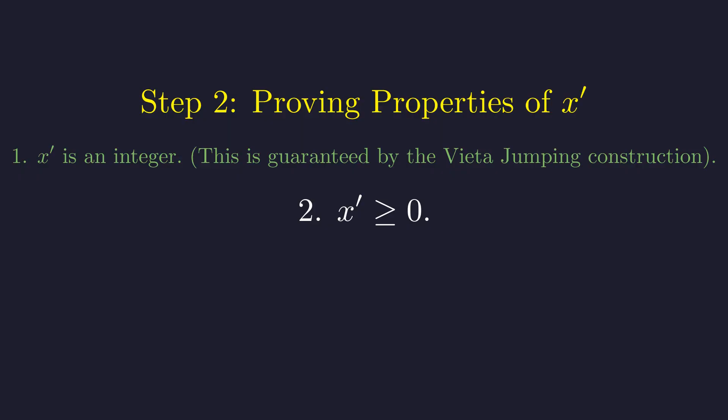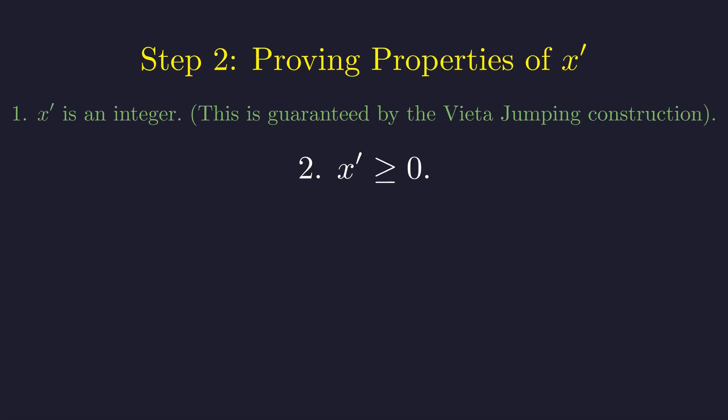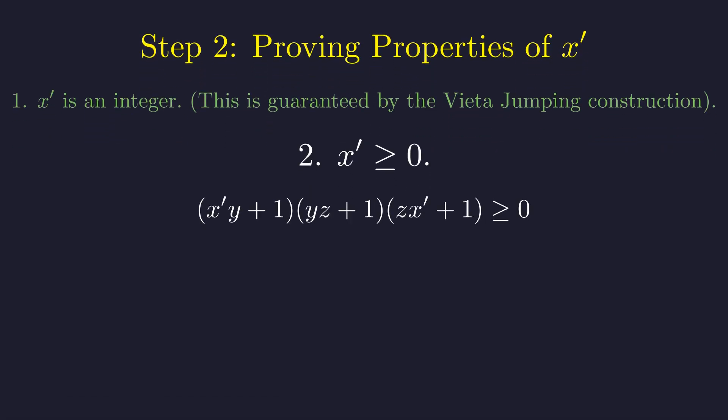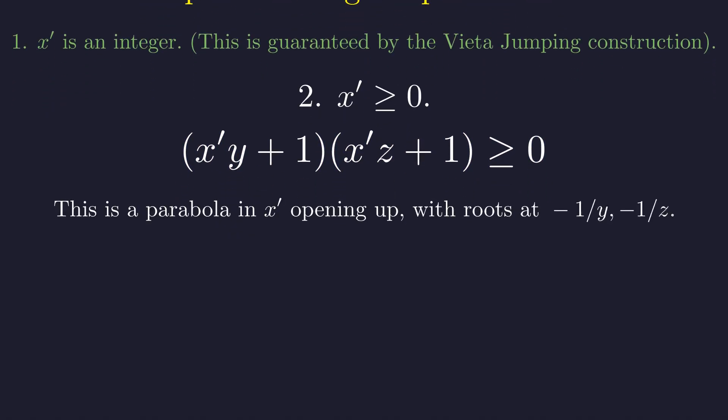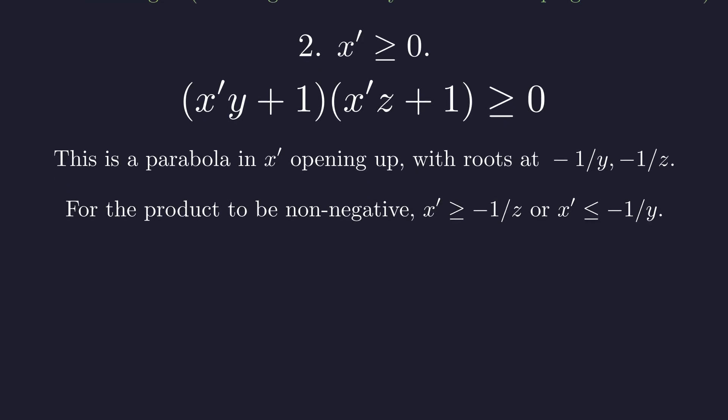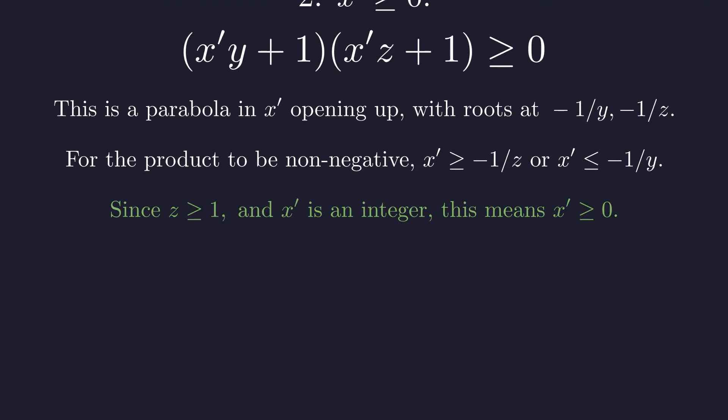For the second fact, let's think about why x prime can't be negative. Since x prime, y, z forms a solution, their product must be a perfect square, which means it's definitely non-negative. So we need x prime times y plus 1 times y times z plus 1 times z times x prime plus 1 to be non-negative. Since y and z are positive, that middle factor is definitely positive, so we can focus on the other two. This leaves us with the condition that x prime y plus 1 times x prime z plus 1 must be non-negative. This is a quadratic in x prime that opens upward, and its roots are at negative 1 over y and negative 1 over z. For the parabola to be non-negative, x prime needs to be outside the interval between these roots. Since y is bigger than z, negative 1 over z is the larger of the two roots. Since z is at least 1, negative 1 over z is somewhere between negative 1 and 0. For x prime to be an integer greater than this, it must be at least 0.